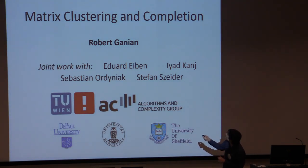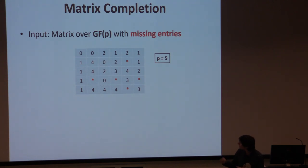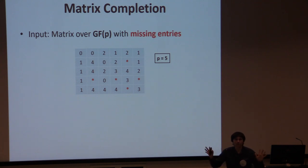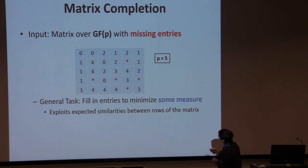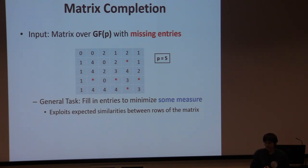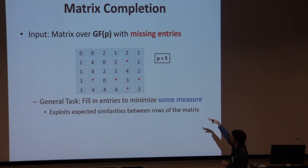So what problems are we going to be speaking about? The main problem I'm interested in is matrix completion. Our input is a matrix over some general field — let's say numbers modulo a prime p — and some entries in this matrix are simply missing. As the name suggests, we want to complete the matrix, fill in all these missing entries (these red stars), in a way which minimizes some measure. In general, the idea is to exploit some similarity between the rows of the matrix.